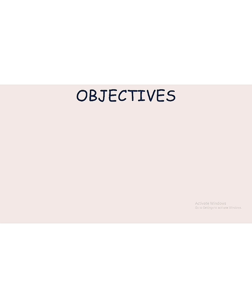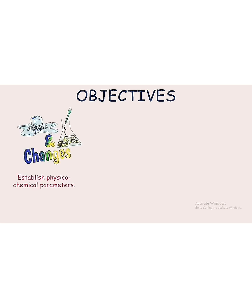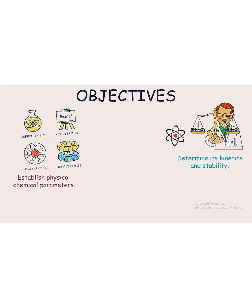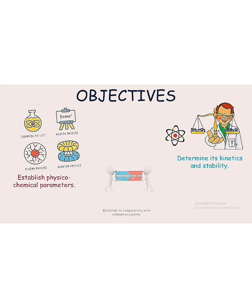To achieve its goal, various objectives are set for pre-formulation studies, which act as its milestones. The first one is to establish its physicochemical parameters so that their effect can be studied and possible modifications can be carried out to avoid all shortcomings. The second one is to establish its kinetics and stability.